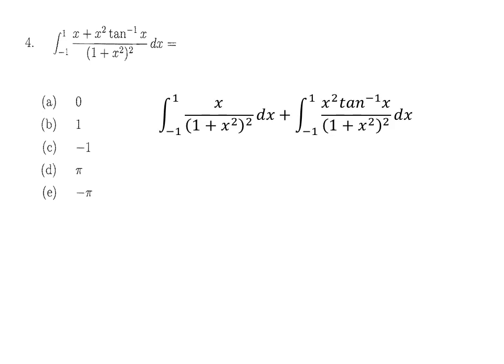For question 4, we rearrange the integral and use the identity: if the integrand is an odd function and the limits are symmetric (same numerical value with opposite signs), the answer is 0. Both integrals have odd numerators — x is clearly odd for the left integral, and for the right, x² is even but multiplied by arctan(x) which is odd, making the product odd. So the answer is 0 for both, giving option A.